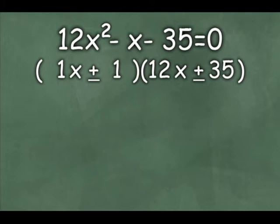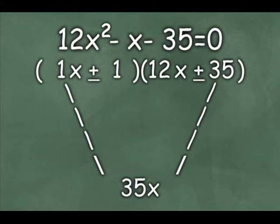You'll notice that 1x and 35, if you multiply them, that's considered the outer product and you would get 35x. If you multiply 1 and 12x, you get the inner product, which is 12x. Now what are we going to do with this outer product and this inner product? Well, when you're multiplying two binomial terms, you FOIL, remember? First, outer, inner, and last.